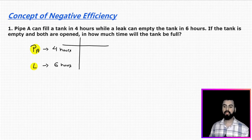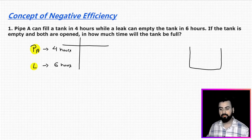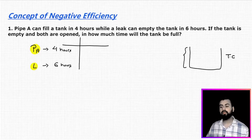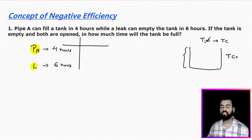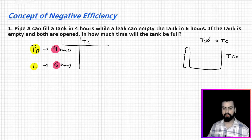These are problems based on pipes and systems. In pipes and systems, instead of completing a job, the work is to fill or empty the tank. We don't know the tank's capacity, so we are going to assume the total capacity. Instead of assuming total work, we assume total capacity — that is the only change. We take the LCM of 4 and 6, which is 12. So let me assume the total capacity of the tank as 12 units.